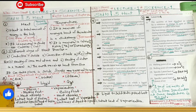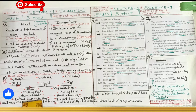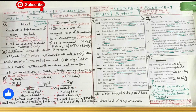When solid converts to liquid, heat is absorbed. When liquid converts to gas, heat is also absorbed. The heat absorbed at a constant temperature during the transformation from solid to liquid is called latent heat of fusion. During this process, the temperature remains constant and the heat is used only to break the bonds between molecules.